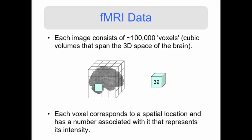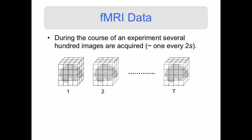Each voxel corresponds to a spatial location in the brain and also has a number associated with it that represents its intensity. In this cartoon image, the number shown is 39. We'll talk more about what this intensity means later on.